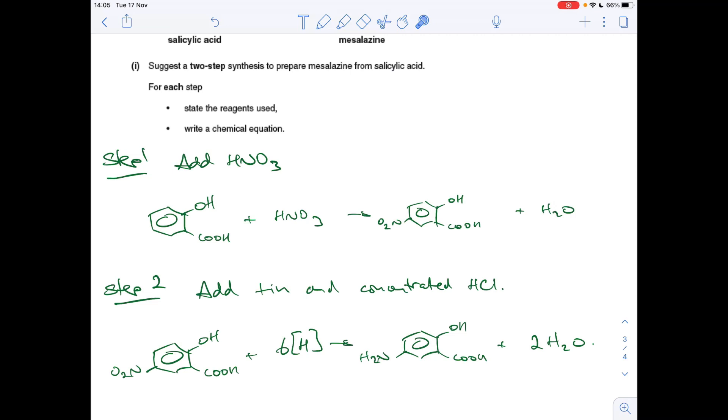And step two, remember we said we needed to reduce this nitro group to the amino group. So you do that by using tin and concentrated hydrochloric acid. And the equation, you represent the reducing agent with this H in square brackets, and to get it to balance, you need six moles of reducing agent, and you make two moles of water.